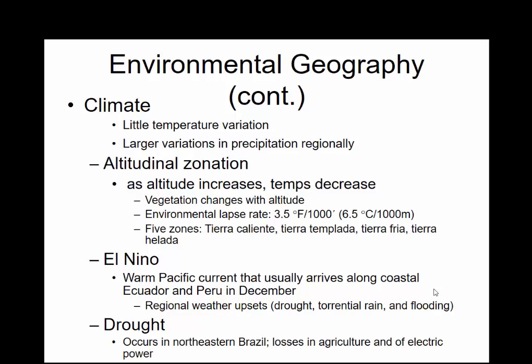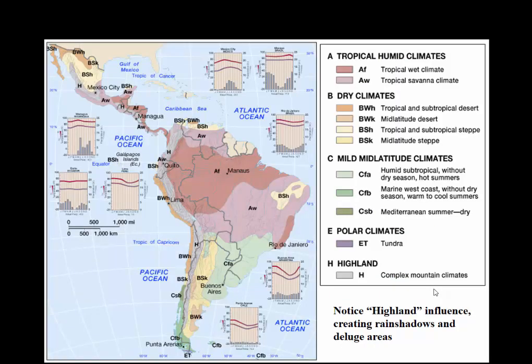You can see some of the environmental geography and physical issues they deal with: drought, El Niño, and altitudinal zonation, because there are stark temperature changes as you move further and further up. Looking at the climate regimes, a lot of these are going to be your A climates — tropical wet. We don't even get down to any of the D climates like we see in Canada or Russia.